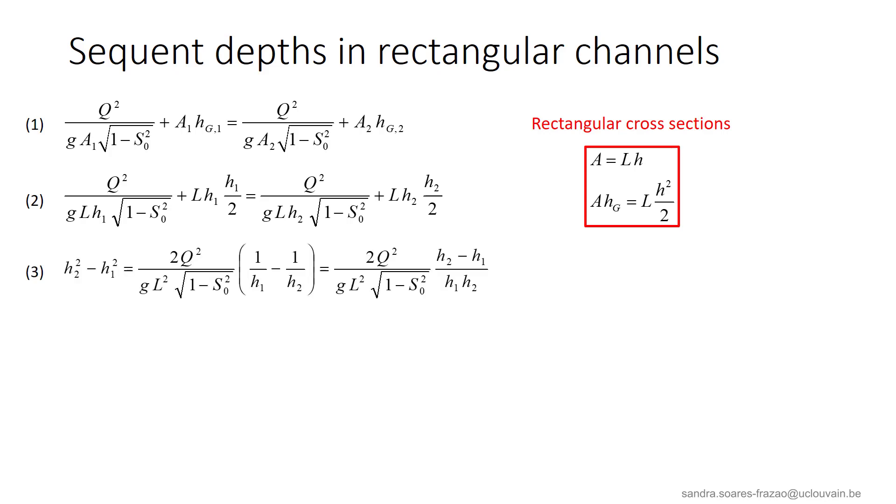Dividing then the equation by l divided by 2, ungrouping the terms, we obtain equation 3, and then, dividing by h2 minus h1, we obtain equation 4.